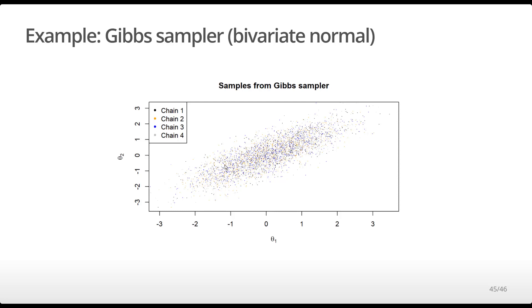Notice that all of the chains are producing samples in roughly the same part of the plot, which is an indication that the chains have converged. This is not how you would normally assess convergence of your MCMC chains, but it's better than nothing.